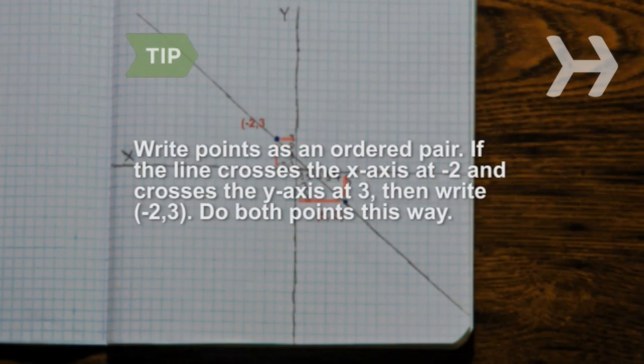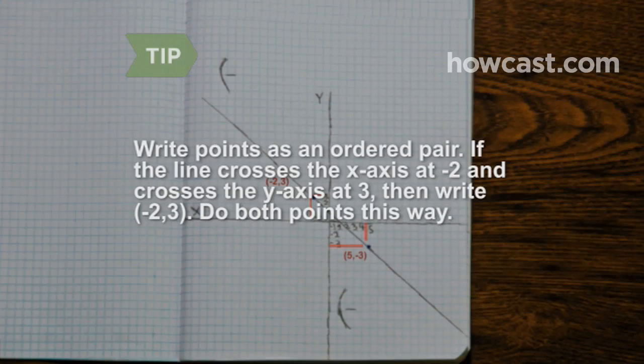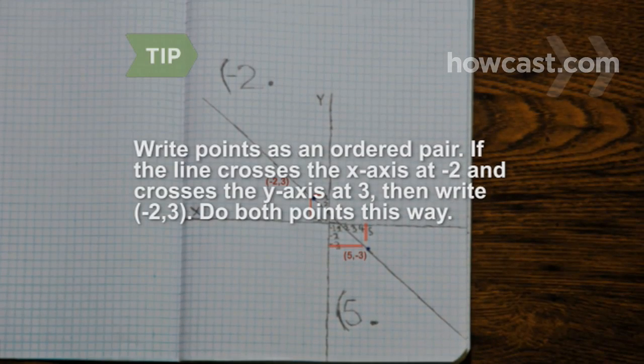Write these points as ordered pairs, two numbers inside parentheses, first the X point and then the Y.